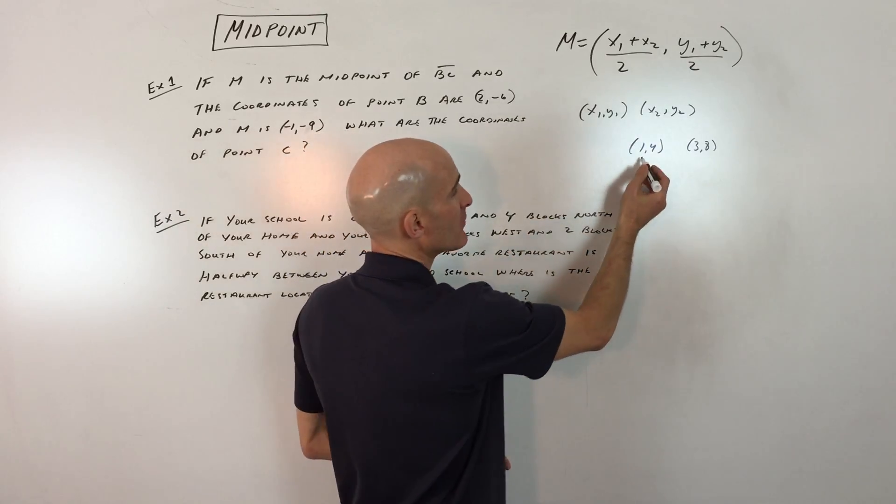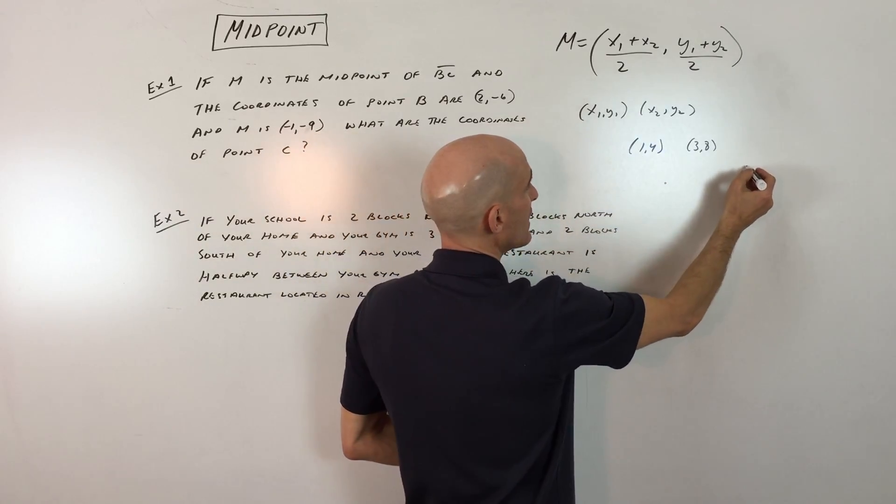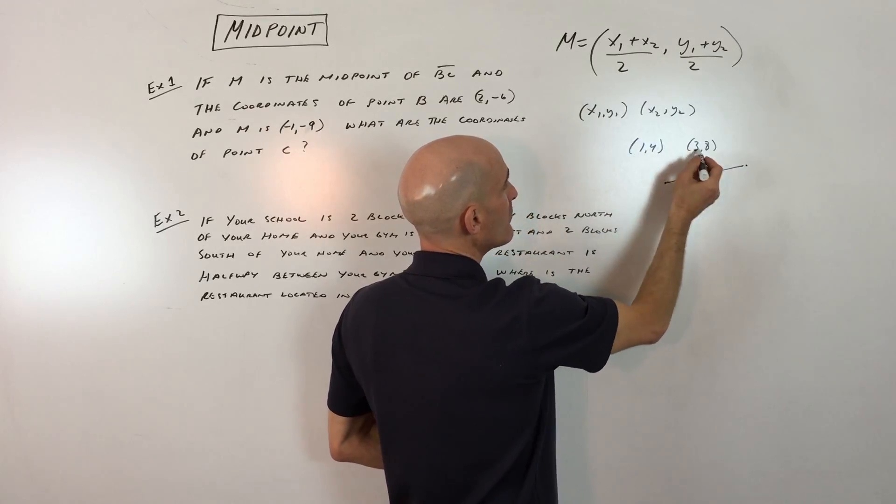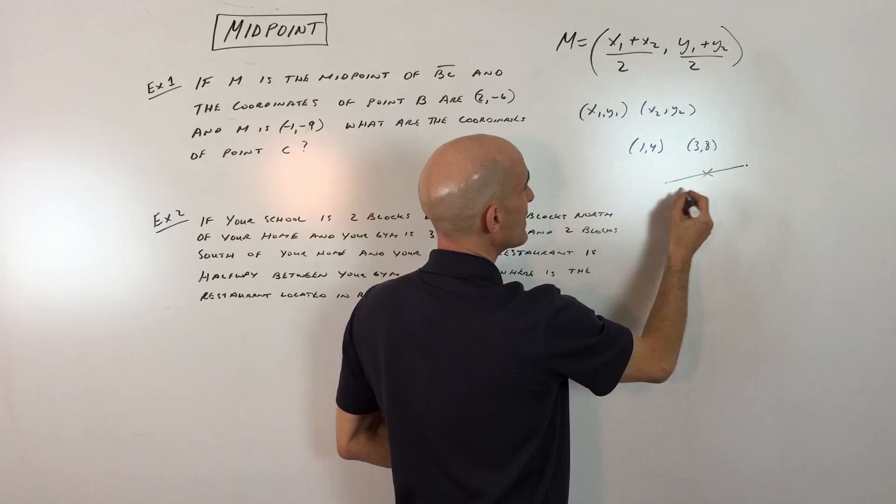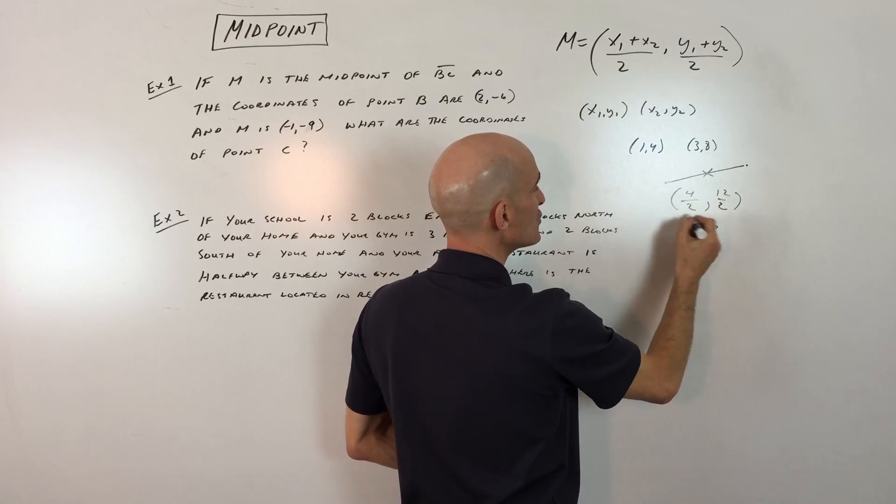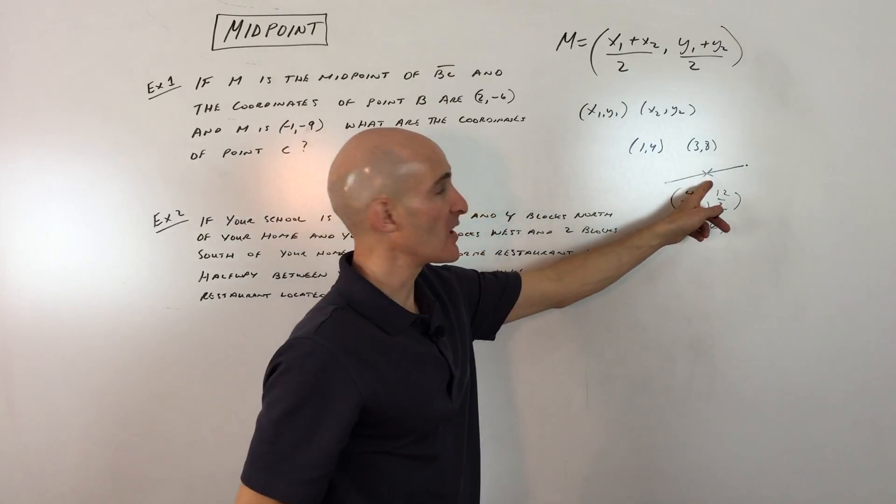For example, if we have the points 1, 4, and 3, 8, I'll draw a diagram like this. We're trying to find the midpoint. 1 plus 3 is 4 divided by 2, and 4 plus 8 is 12 divided by 2. So you can see this is going to be 2, 6 as the location of the midpoint.